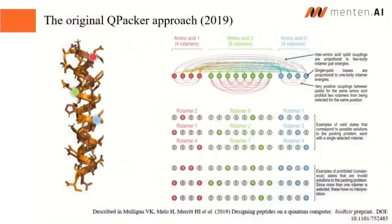Using quantum computing, we realized that we can actually begin to solve this problem. This work is accessible on arXiv — this is the first version we described and published in 2019. The problem we're trying to solve is: given a backbone of a structure, we want to find the amino acids and conformations that will optimize the structure — in other words, find the lowest energy state that would stabilize the peptide.